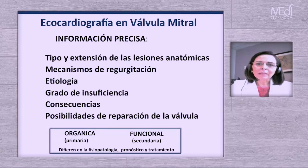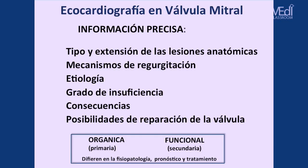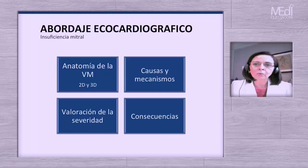El ecocardiograma en sus diferentes modalidades —principalmente la ecocardiografía transtorácica complementada con el ecocardiograma transesofágico bidimensional y tridimensional— nos proporciona información precisa del tipo y extensión de las lesiones anatómicas, los mecanismos de regurgitación, la etiología, el grado de la insuficiencia y sus consecuencias, permitiendo definir si la válvula tiene posibilidad de ser reparada. La patología mitral se divide en orgánica o primaria y funcional o secundaria, y difieren en fisiopatología, pronóstico y tratamiento.